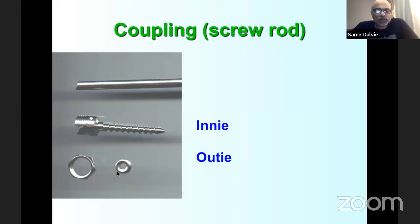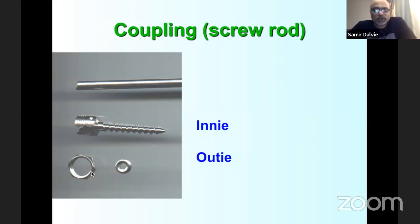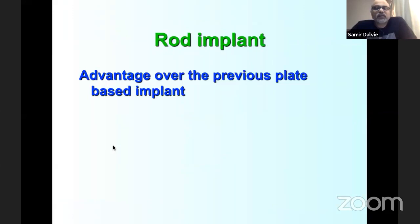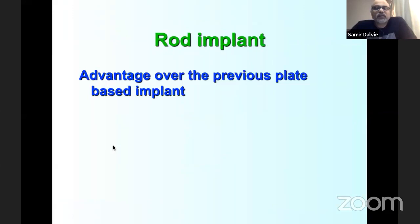Rod systems became standard with innie-outie mechanisms — systems using only outies became too bulky; systems using only innies caused loose tulips when tightened. Even Medtronic's M10 system had widespread loosening and was withdrawn. Jürgen Harms in Germany and Professor Shufflebarger in Miami developed the innie-outie system — Harms' system known as Moss, Shufflebarger's as Miami — which DePuy combined and advanced. Now most modern systems use only an innie mechanism.